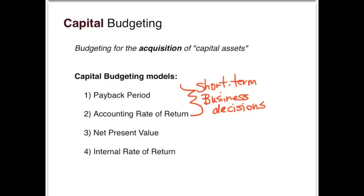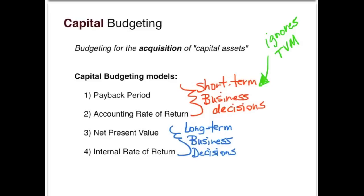The first two — the payback period and the accounting rate of return — are used for short-term business decisions. This is because these two models ignore the time value of money concept. The other two capital budgeting models, net present value and internal rate of return, focus on long-term business decisions because they incorporate the time value of money concept.